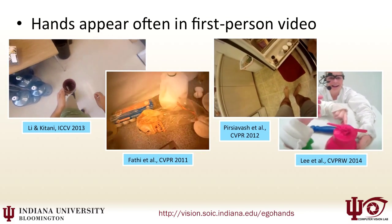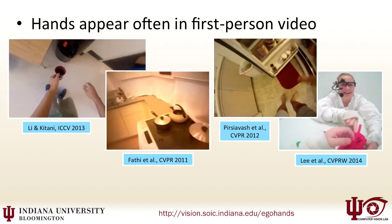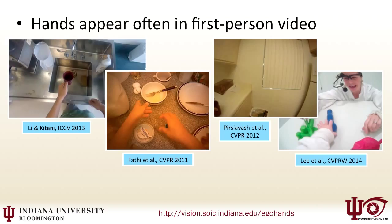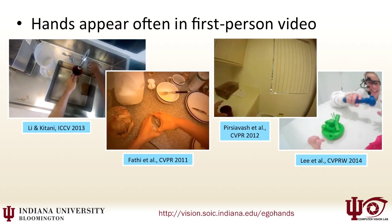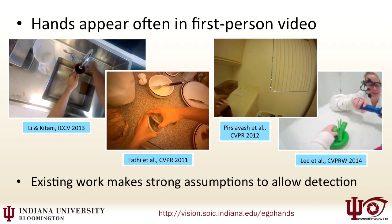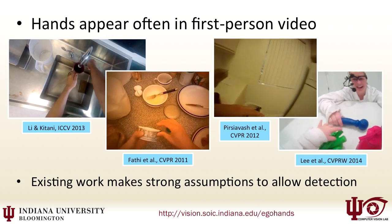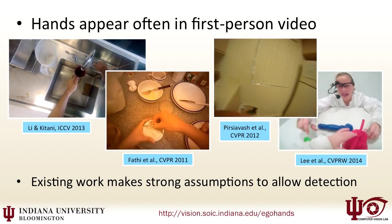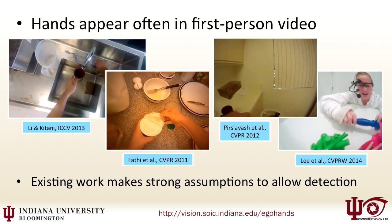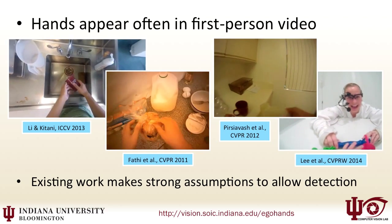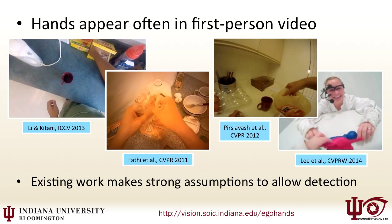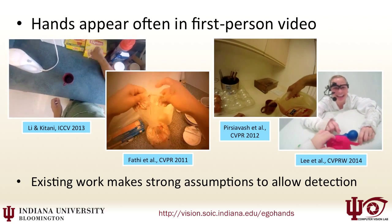Hands appear often in first-person video and give important cues about what people are doing. However, most work in egocentric hand detection makes strong assumptions, like that no other people are in view or that the environment is carefully controlled.